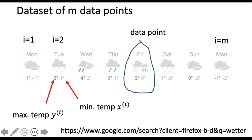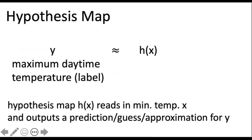The machine learning problem here is to predict the maximum daytime temperature based on the minimum daytime temperature that we observe in the morning of the ski day. Machine learning methods learn a hypothesis h, which is a function or map that reads in the feature x — the minimum daytime temperature — as an argument. The output or function value of the hypothesis is the prediction for the label y, which is the maximum daytime temperature in our application.